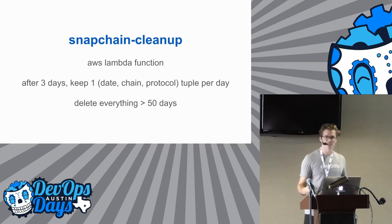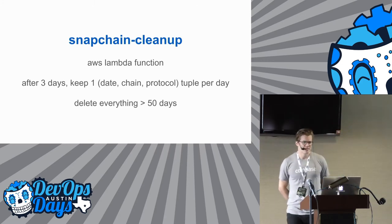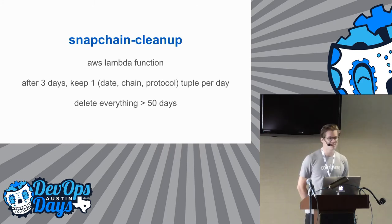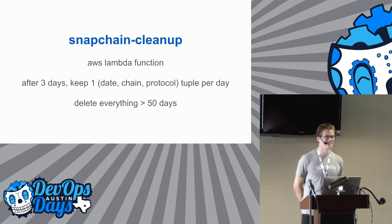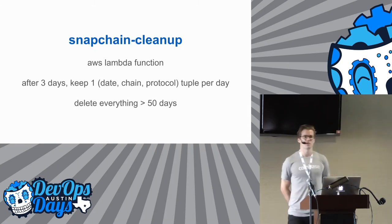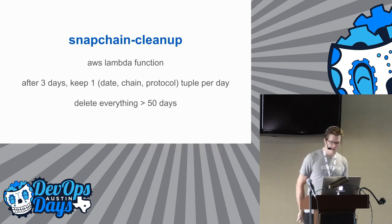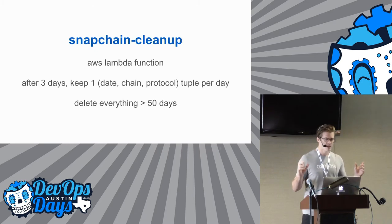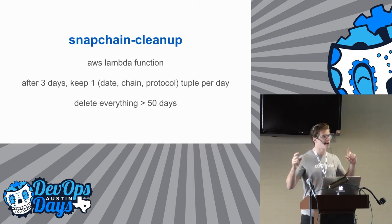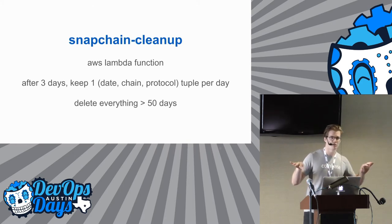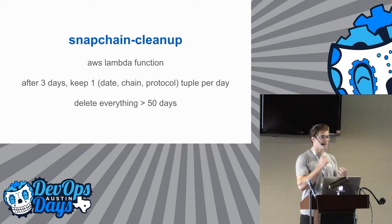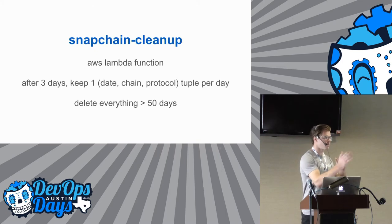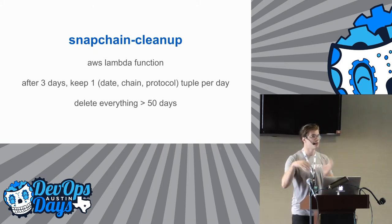During the course of developing this project, I ended up taking down our dev deploys several times because I was exceeding the EBS volume capacity on Amazon. So we had to think about an actual strategy for cleaning this up. It's a pretty simple Lambda function with a retention policy I like a lot: keep everything for three days, then after that keep one date-chain-protocol tuple per day, and after 50 days just drop everything. This works nicely because the blockchain is an append-only data store — anything more than 50 days old, we still have that state in a newer version.